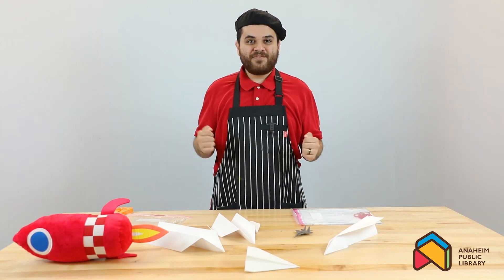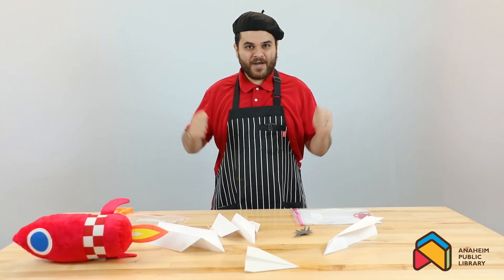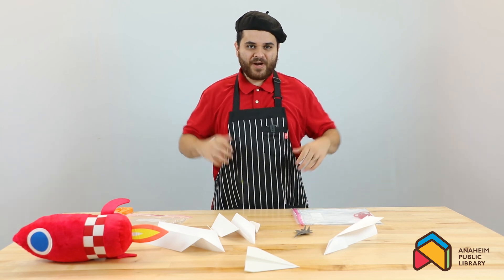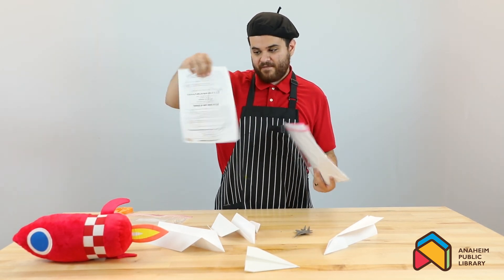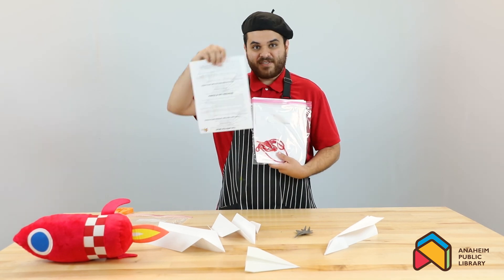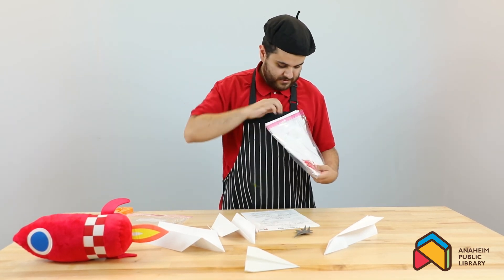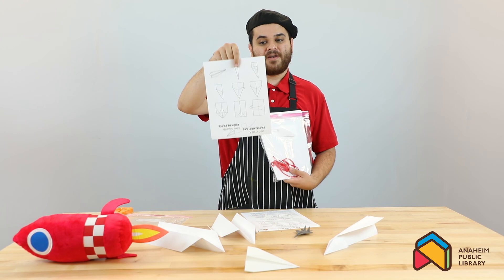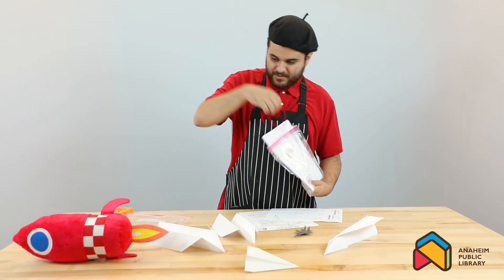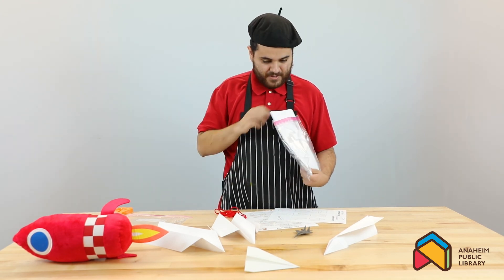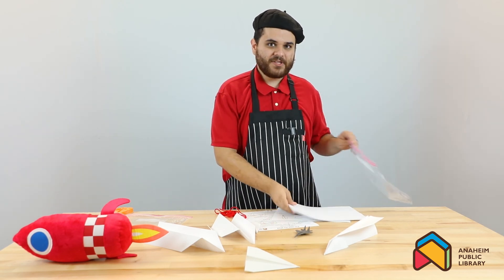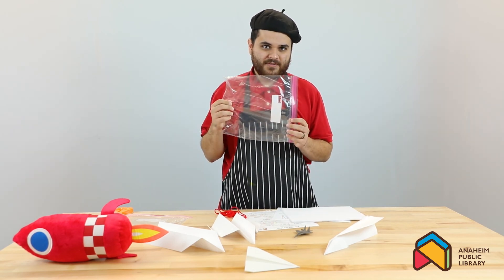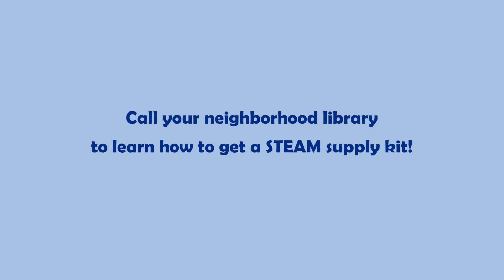Hi everyone! Welcome to Steam Adventures here at the Anaheim Public Library. My name is Lei Wan and today we're gonna have fun with the wind. Today's kit is gonna consist of these instructions on how to build an airplane, some yarn, a popsicle stick, some paper, and most importantly the bag. All you have to do to get this awesome kit is call your local Anaheim Public Library.